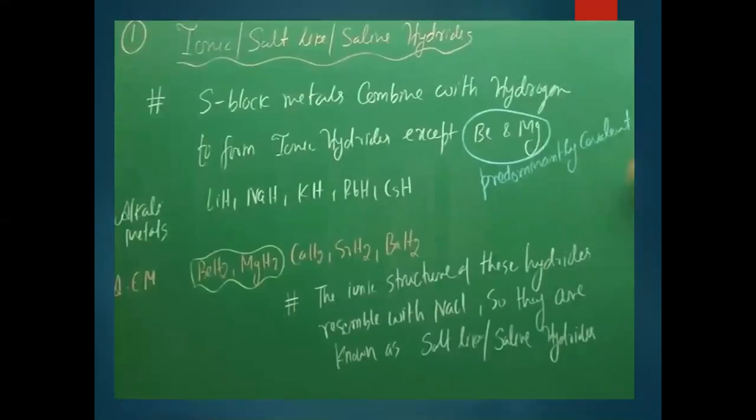First we study ionic or salt-like or saline hydrides. They are called ionic hydrides because they are formed by s-block metals — group 1 and group 2 — forming ionic bonds. These compounds are formed by the combination of hydrogen with highly electropositive metals, formed by transfer of electrons.